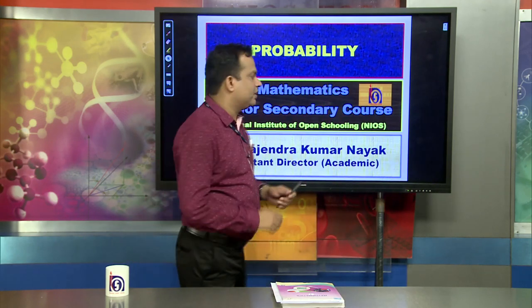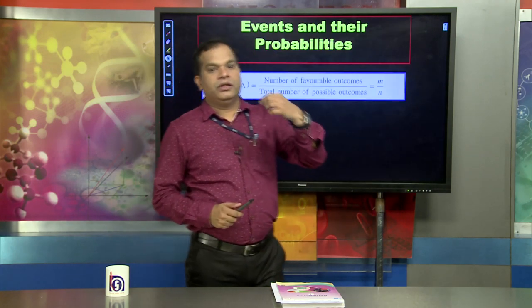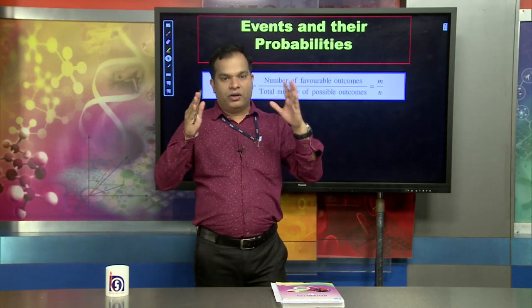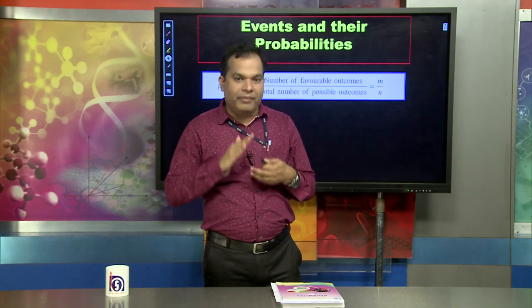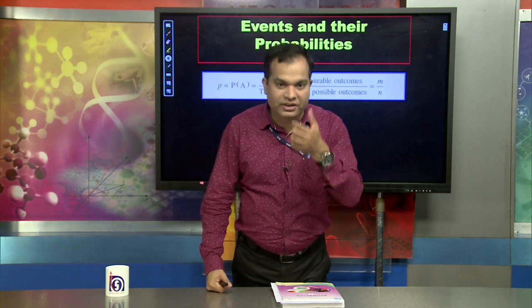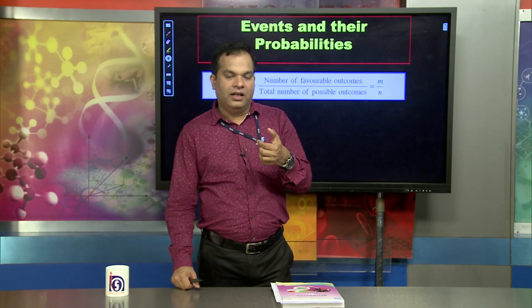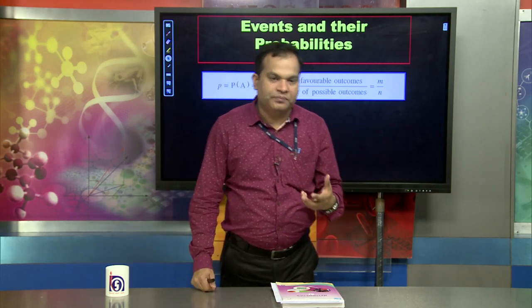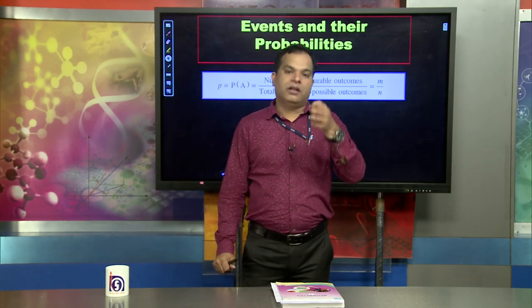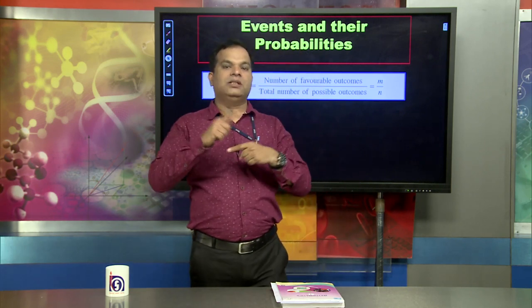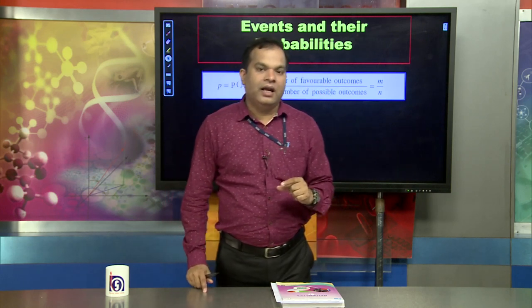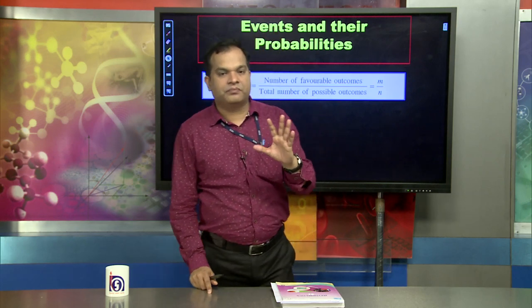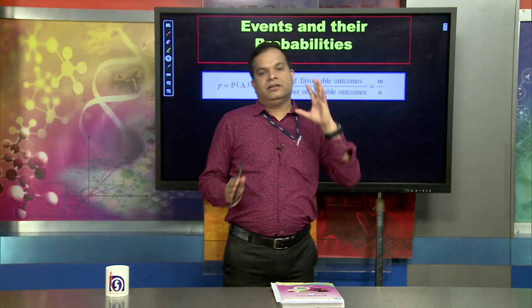When talking about probability, an event is involved — that is a random experiment. For example, before a cricket match, the umpire tosses a coin and invites both captains to choose batting or bowling. In a coin, there are two things: head and tail. If it is an unbiased coin, the probability of head or tail coming up is 50 percent each.